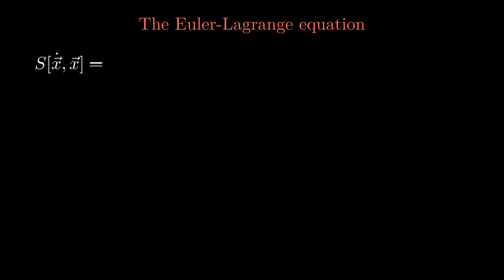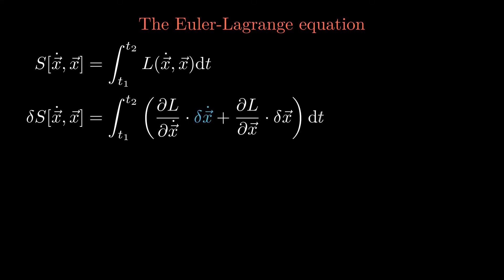We start with the generic Lagrangian that depends on the position x and its derivative, the velocity. If one wants to express the change in the action in the presence of an added perturbation delta x, the partial derivatives of the Lagrangian have to be multiplied by the perturbation and its time derivative respectively. Now the product rule from calculus can be used to replace the first term of the integral. This procedure is also called integration by parts.